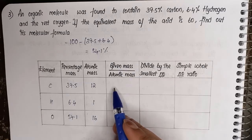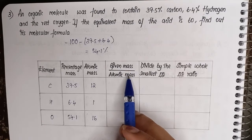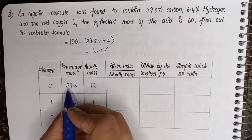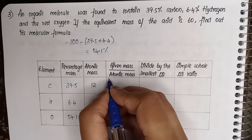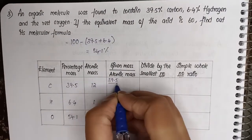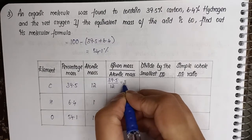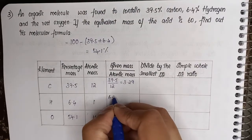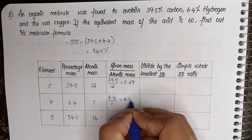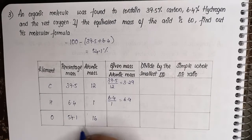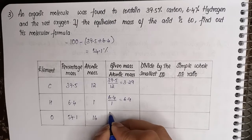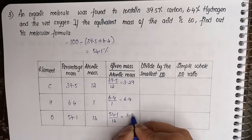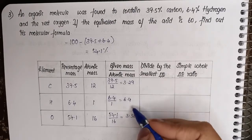Now we need to calculate the number of moles in the third column. We divide the given percentage by the atomic mass of each element. For carbon: 39.5 divided by 12 equals 3.29. For hydrogen: 6.4 divided by 1 equals 6.4. For oxygen: 54.1 divided by 16 equals 3.38. So the fourth column gives us the number of moles for each element.